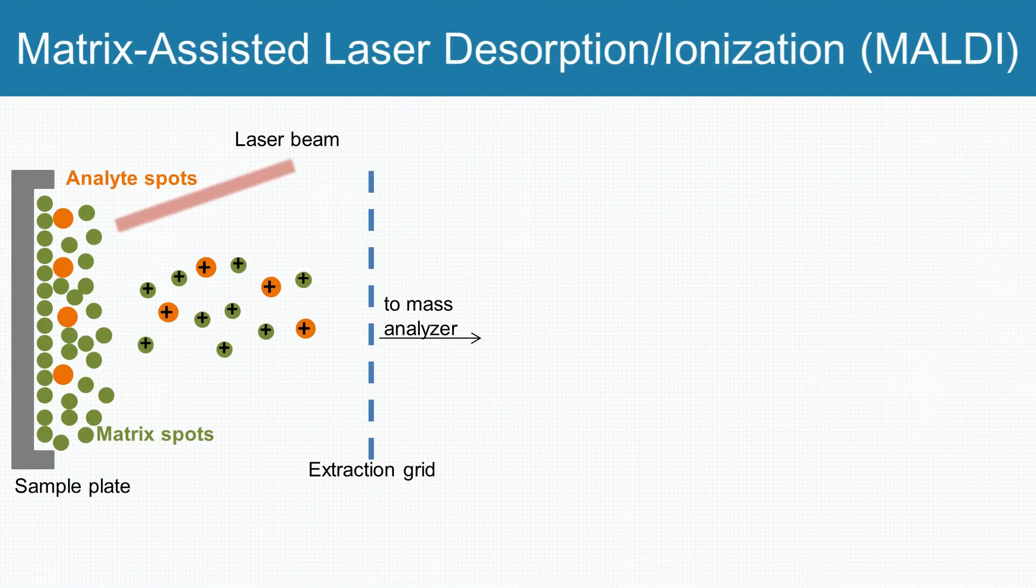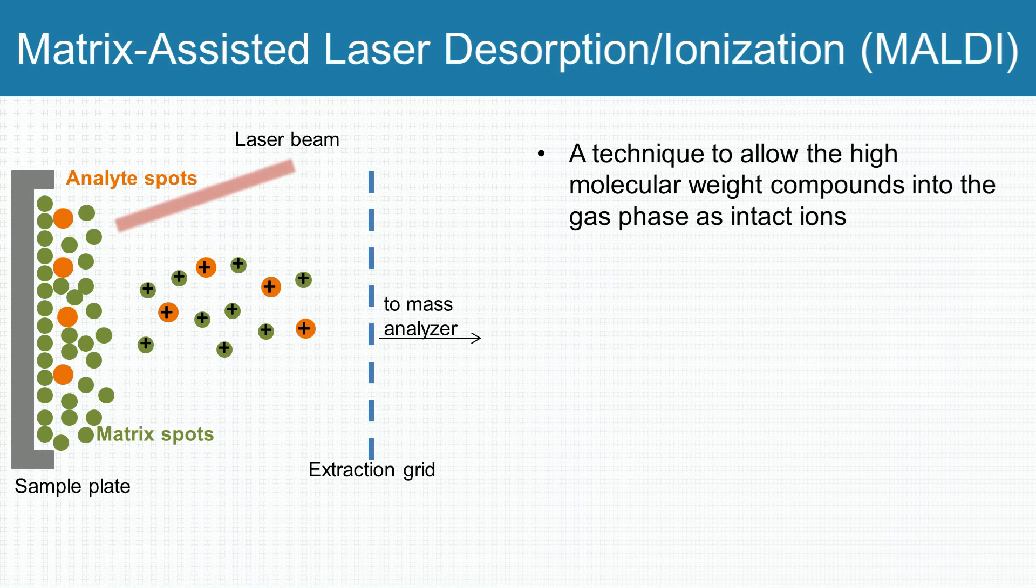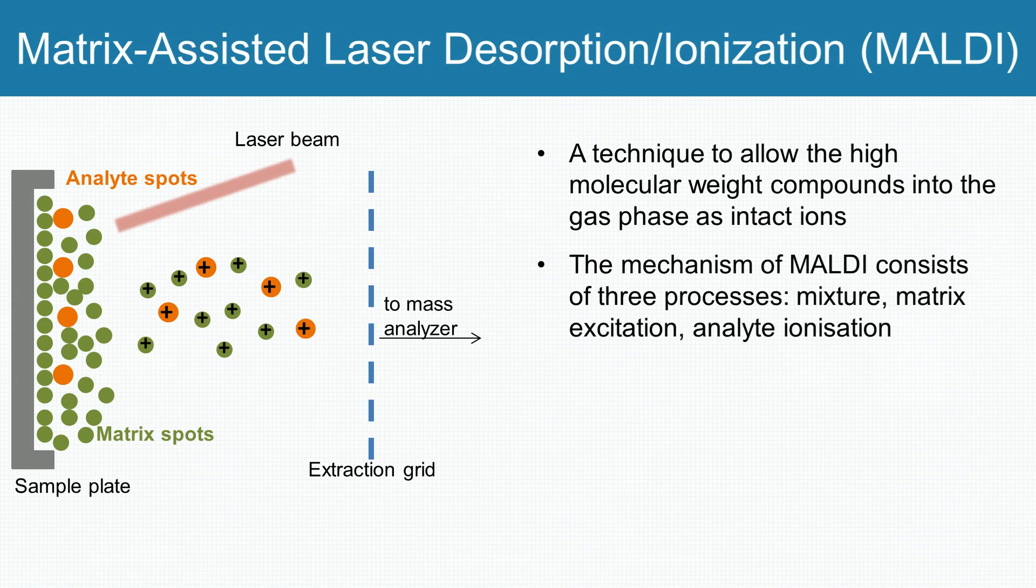Matrix-assisted laser desorption ionization allows high molecular weight compounds into the gas phase as intact ions. The mechanism consists of three processes. Firstly, the sample is mixed with a suitable matrix material in excess and applied to a plate.